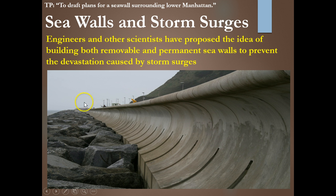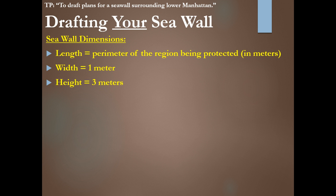So maybe building a seawall — we have a picture here of a concave seawall — can prevent a lot of damage from waves that come up onto shore and destroy homes, businesses, and property. For drafting your seawall, we're going to put together two dimensions first. The length of your seawall is going to be the perimeter of the region being protected — in this case, lower Manhattan. The width is going to be one meter, and the height of the wall is going to be three meters.